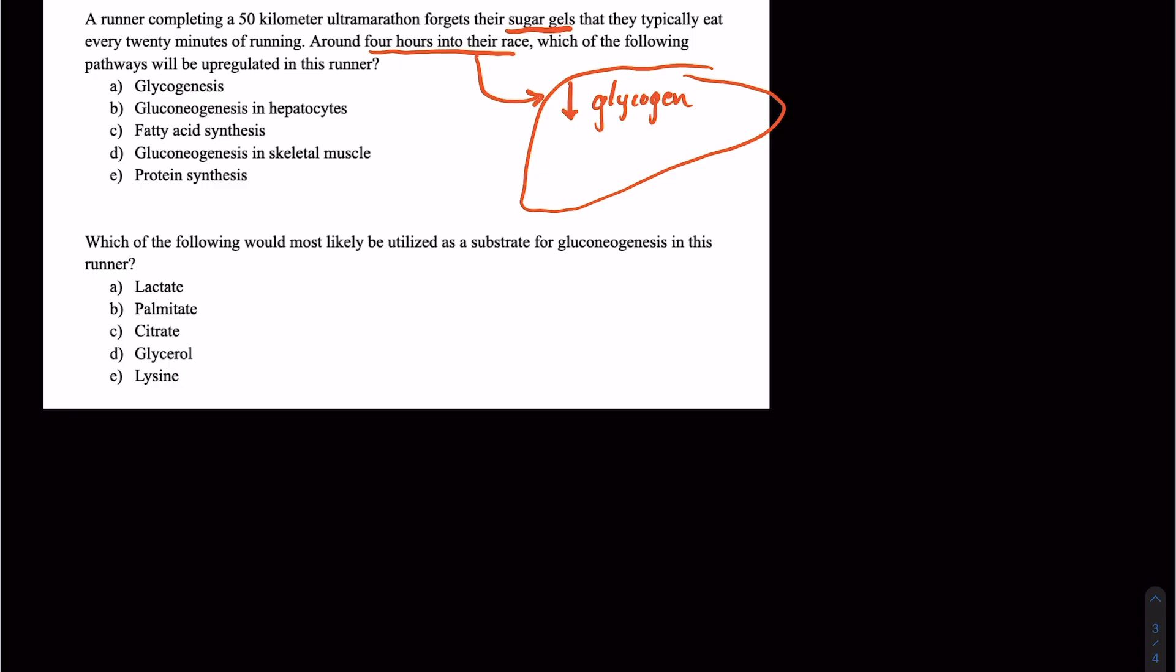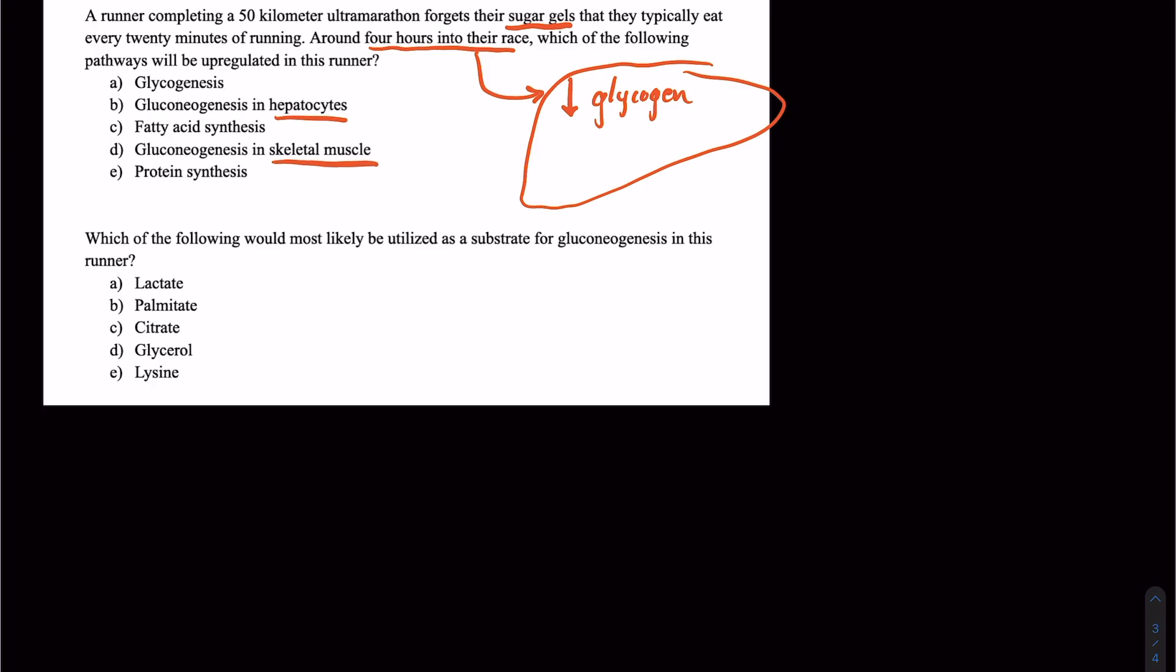So gluconeogenesis is likely going to be upregulated. So then we have to ask ourselves, where is this gluconeogenesis going to be upregulated? Is it going to be in the hepatocytes or the skeletal muscle? So remember, hepatocytes is just a fancy way to say liver cell. So that's going to be our best answer.